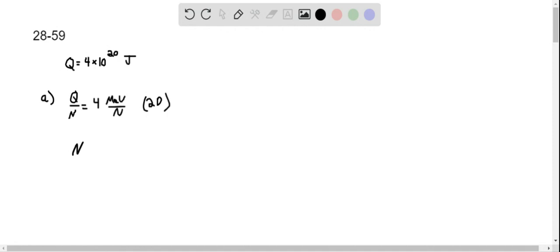So the number of deuterium nuclei would be the amount of energy total divided by the amount of energy released per event. And I'm going to multiply this value by 2 because we need 2 deuterium to produce this amount of energy. So if you multiply this whole term by 2, that would give us the total number of deuterium that would be needed.